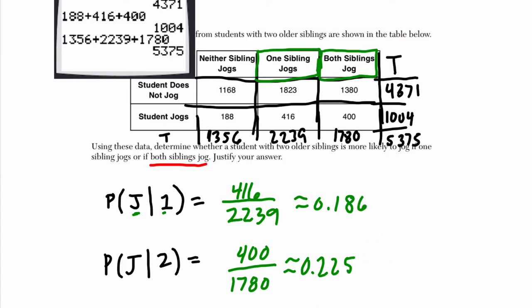Now you could just say to justify, well, 0.225 is greater than 0.186, therefore it's more likely that if they have two siblings who jog, which makes sense, that they would also jog. And that's the way I would solve it. Now what's a common error here that you want to be aware of?